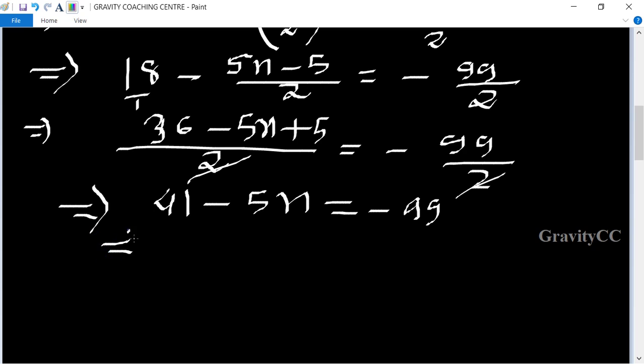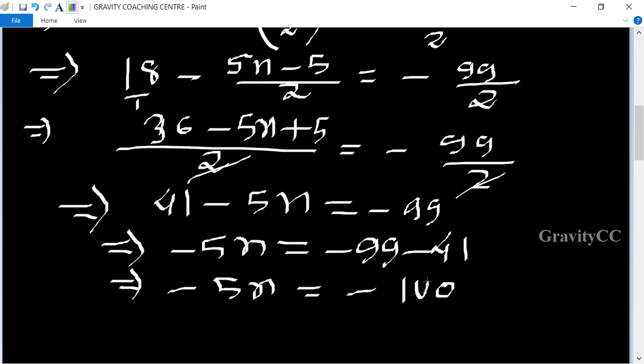minus 5n equals minus 99 minus 41, implies that minus 5n equals minus 140. Minus minus cancel, so n equals 140 upon 5, so n equals 28.